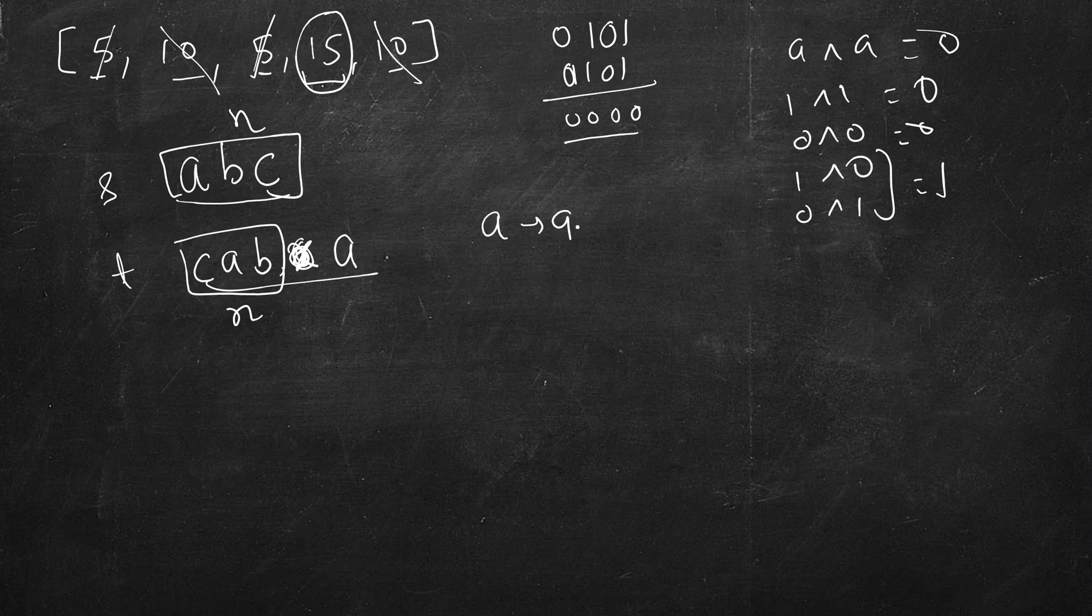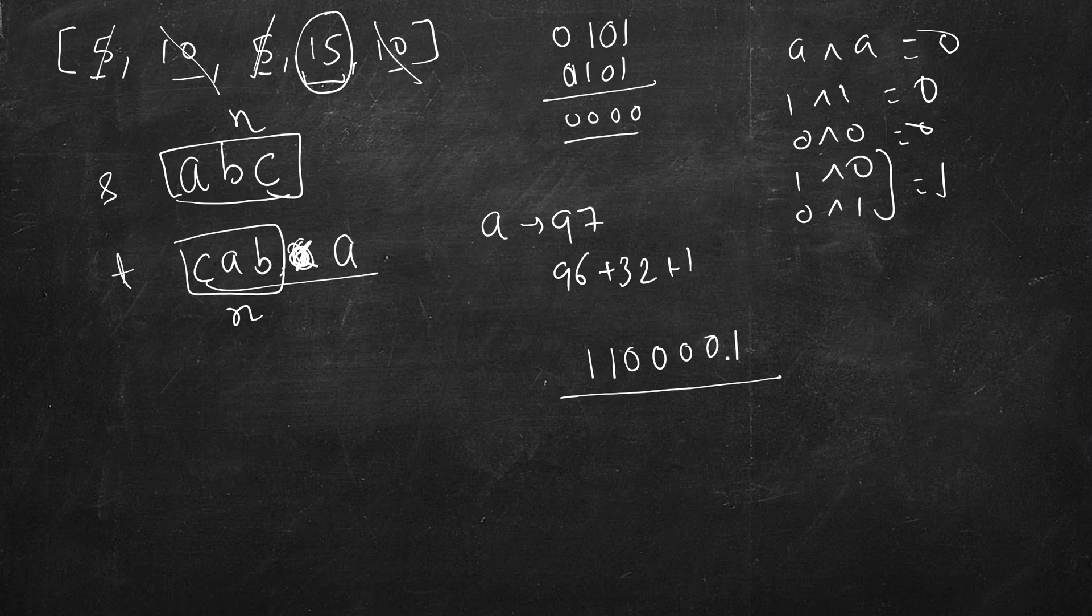Character is nothing but its ASCII value. You can represent it like this. So a has an ASCII value of 97, so it's 96 plus 32 plus 1, so 1, 2, 4, 8, 16, 32, 96 - so this is a.